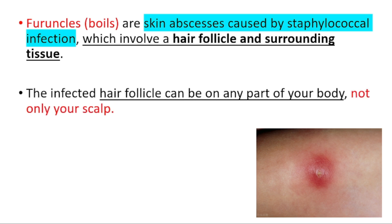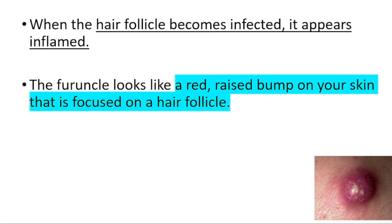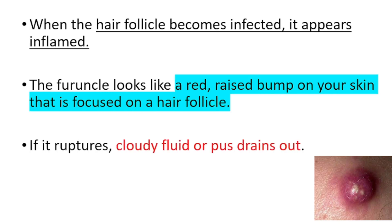The infected hair follicle can be on any part of your body except your skull. When the hair follicle becomes infected it appears inflamed — the furuncle looks like a red raised bump on your skin that is focused on a hair follicle, and if it ruptures, cloudy fluid or pus drains out.